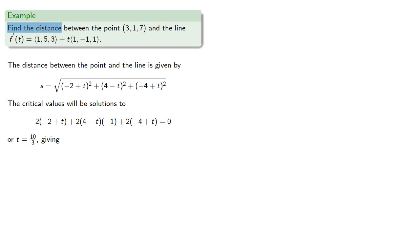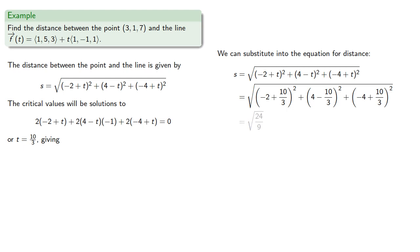Since we want the distance, we can substitute into the equation for distance and find the result. And this will be the least distance, which will be the distance between the point and the line. The advantage of this approach is that it can be applied to any space curve.